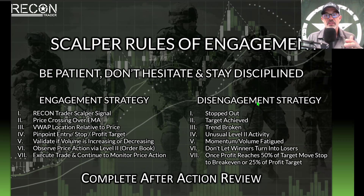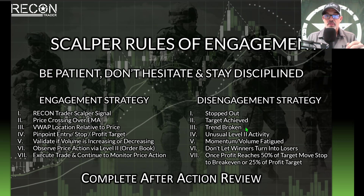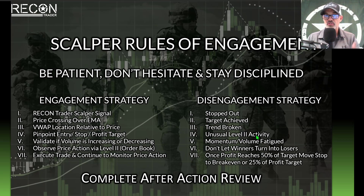The disengagement part of my strategy covers several scenarios. Being stopped out or hitting my target closes the trade. If I see a reversal in the trend I might tap out early. Unusual level two activity — a lot of buying or selling pressure depending on my trade direction — is another reason to tap out, as is fatigued momentum and volume.